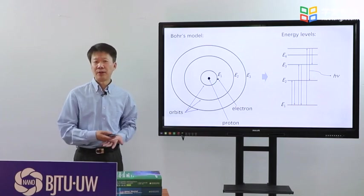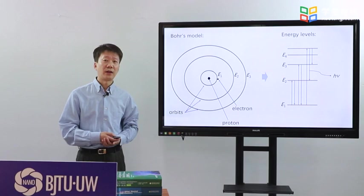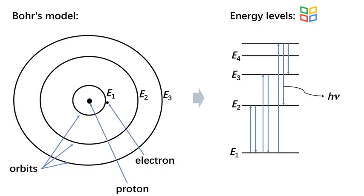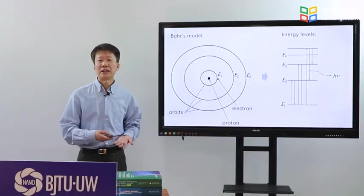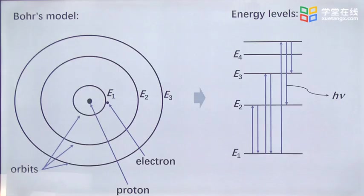Bohr built a model for hydrogen atom on the basis of the three stories. He suggested that the electron move around the nucleus at a stable orbit, with the energies defined exactly by an integer. As you see on the slide, the integer is 1, 2, or 3, or others.